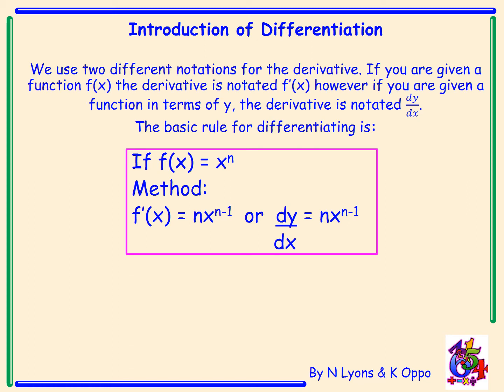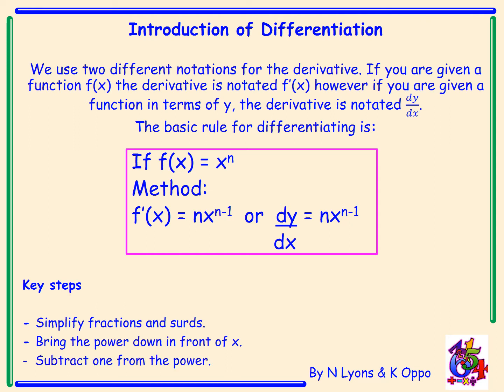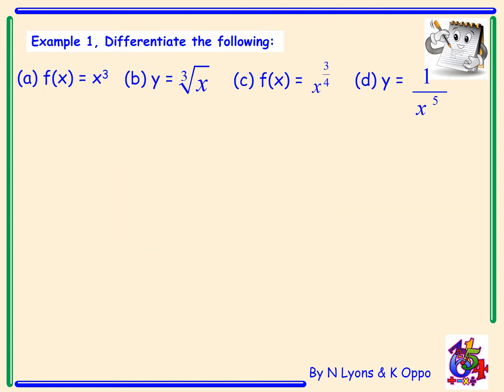If we have x to the power of n, you bring the power down in front of x and subtract 1 from the power. The key steps are: simplifying any fractions or surds before we differentiate, bringing the power down in front of x, and subtracting 1 from the power. We will now differentiate the following examples.